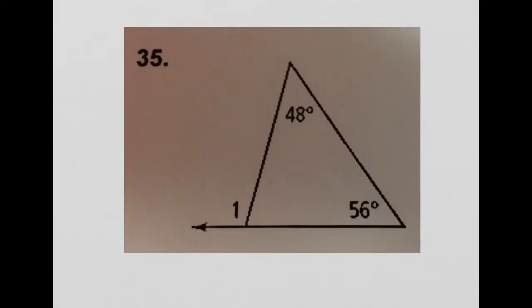Now, number 35 would also like me to solve for the measure of angle 1, this guy right here. So I know that the measure of an exterior angle is going to be equal to the sum of the measures of my remote interior angles. So those are going to be non-adjacent interior angles.